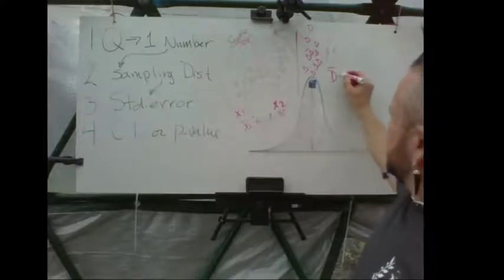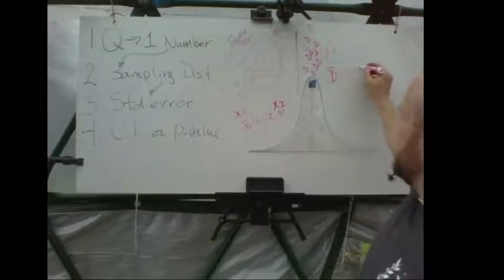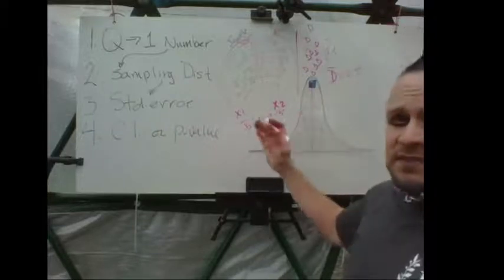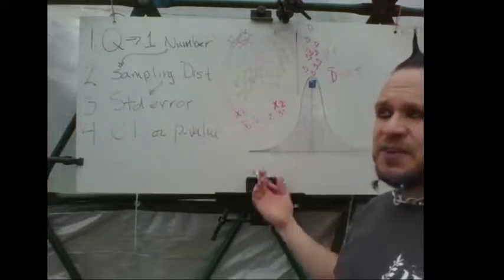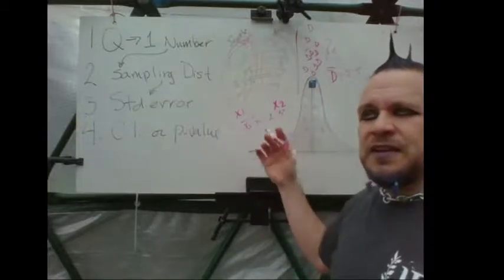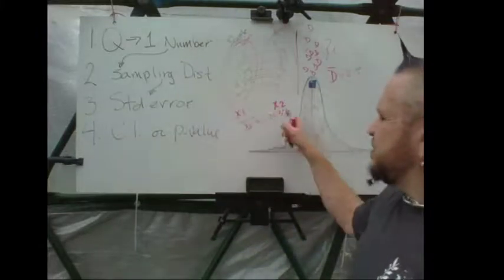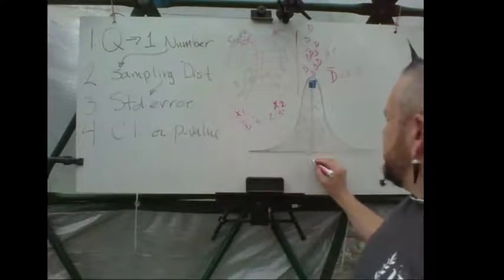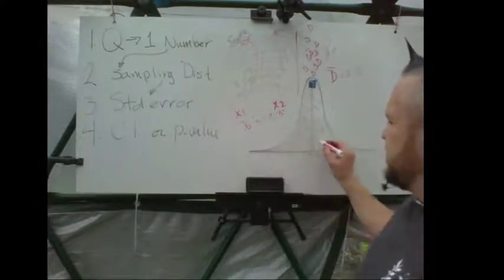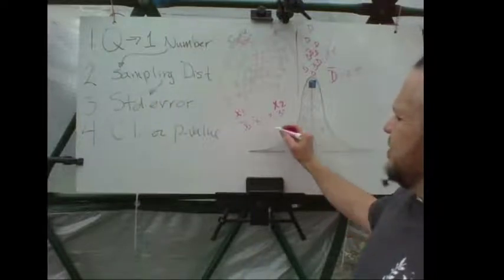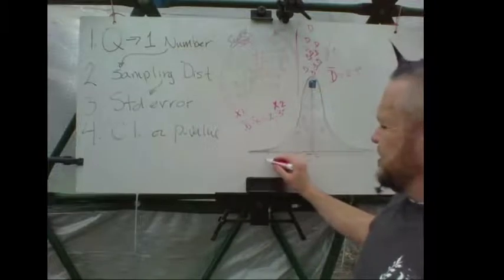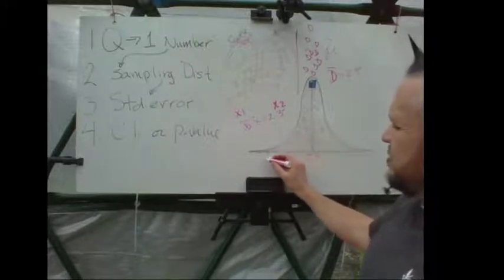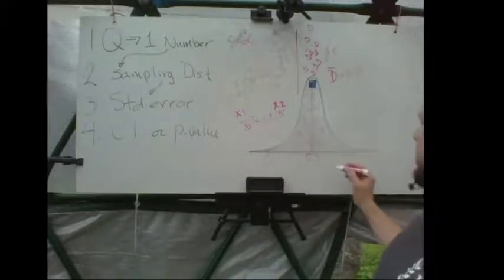Let's say you find D-bar — the mean difference — is 2.3 degrees. The difference between these means is exactly the same as the mean of the differences. So you boil this down to one number, a difference score. It's conceptually the same as an independent samples t-test, just a shortcut when doing it by hand. If you want a 99% confidence interval, you look up T in the table using your N, find the T value — say 2.16 — multiply it by the standard error, and you have a confidence interval.